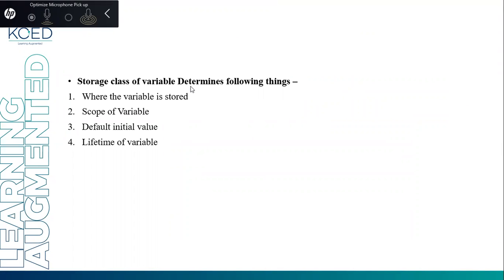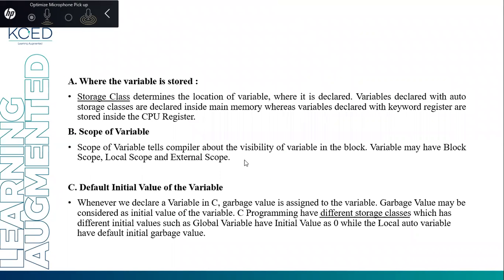The storage class of a variable determines the following things: where the variable is stored, scope of the variable, default initial value, and lifetime of the variable. The storage class determines the location of the variable — where it is declared. Variables declared with the auto storage class are stored inside memory, while variables declared with the keyword register are stored inside the CPU register.